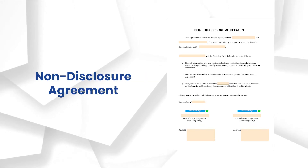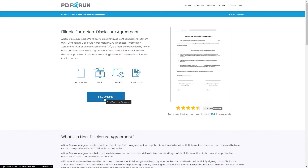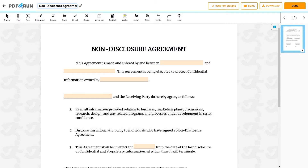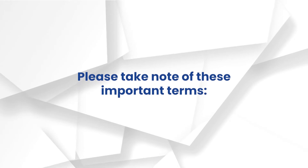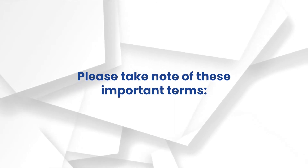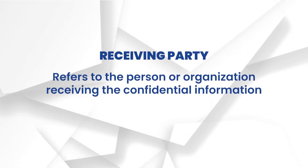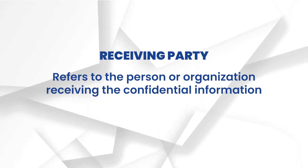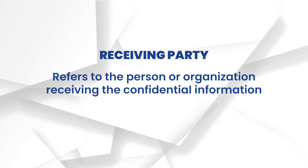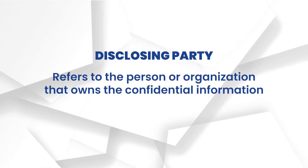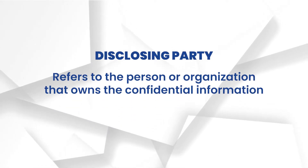To fill out the non-disclosure agreement, click on the fill online button. This will redirect you to PDF Run's online editor. First things first, please take note of these important terms. The receiving party refers to the person or organization receiving the confidential information. On the other hand, the disclosing party refers to the person or organization that owns the confidential information.